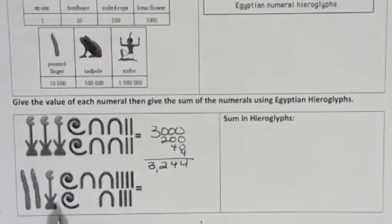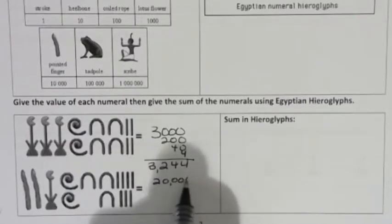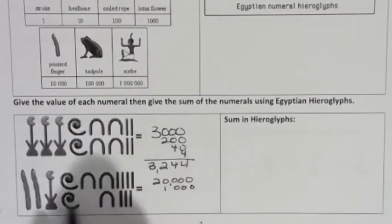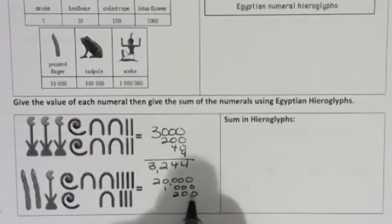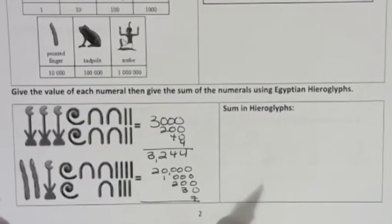And the second one, there's two pointed fingers. And pointed fingers are 10,000. So that's actually 20,000. One lotus flower, 1000. Two coiled ropes, 200. Three heel bones. That's 30. And then seven strokes. That's seven. And you would just add all that up to get your number.